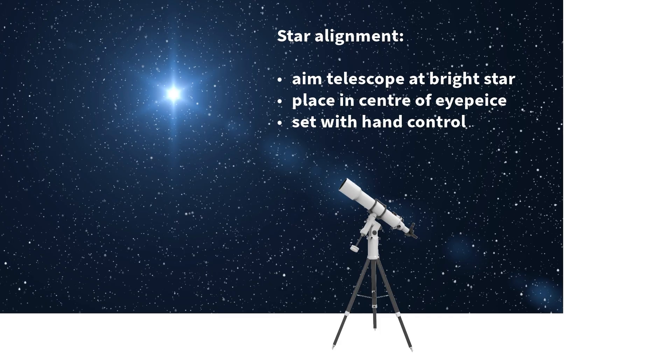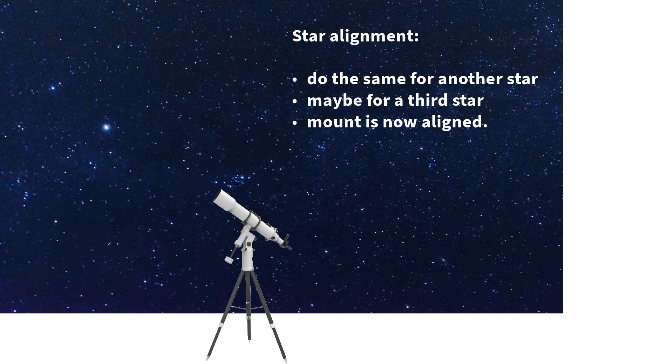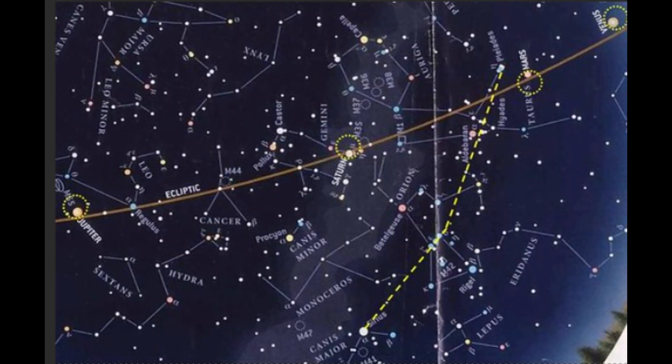If you're using a tracking mount and have a go-to system, then you can use this to find deep sky objects. I'll make a special video about this because it's quite involved, but this is all you need to know for now. Using the hand control, you'd move your telescope to two or three stars and align your telescope — you should have instructions with your equipment to do this. Once you have star-aligned your mount, it will have a map of the sky and you can select an object from its database and your telescope or camera will move to your target.